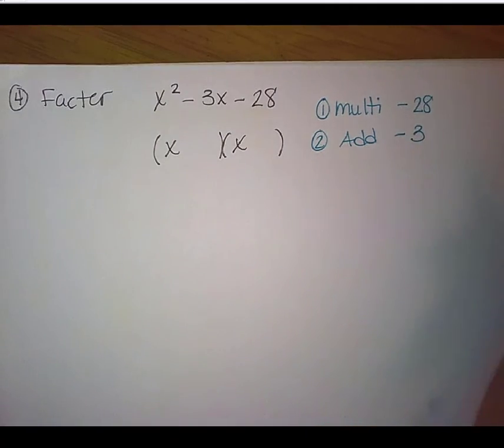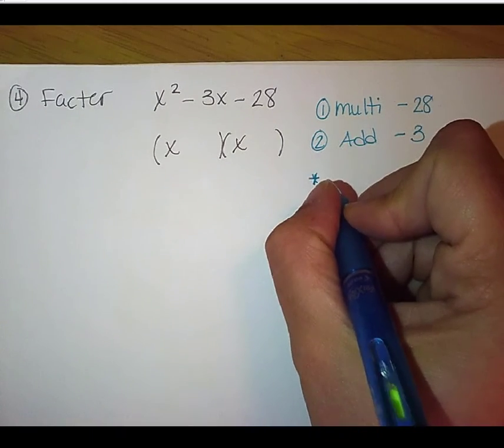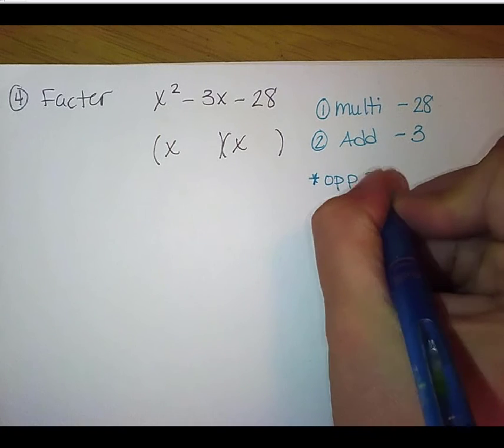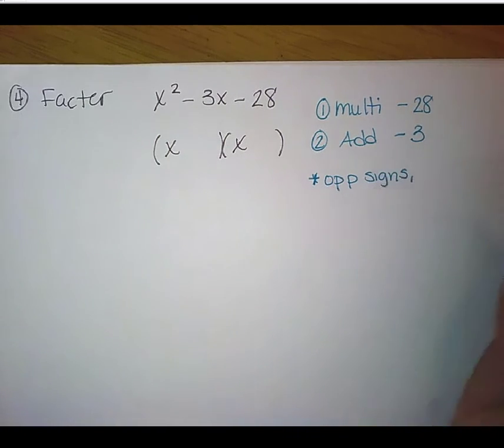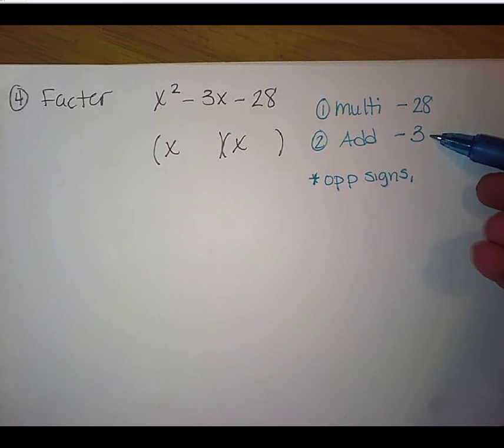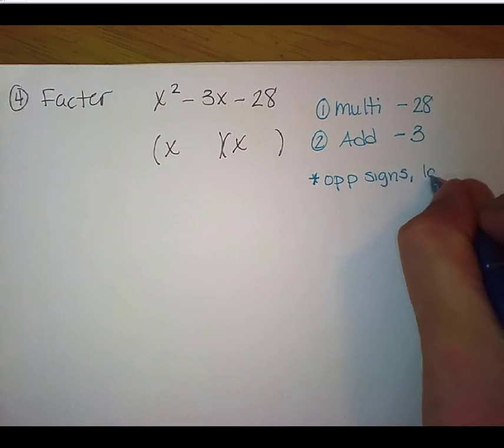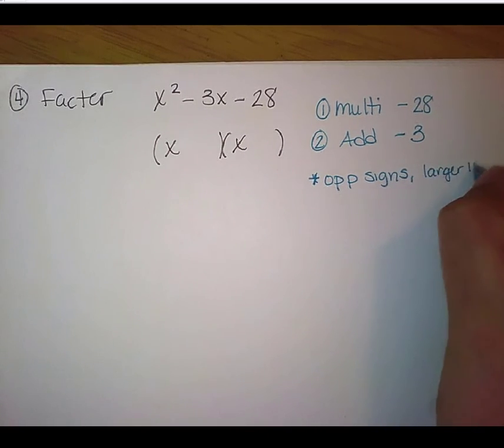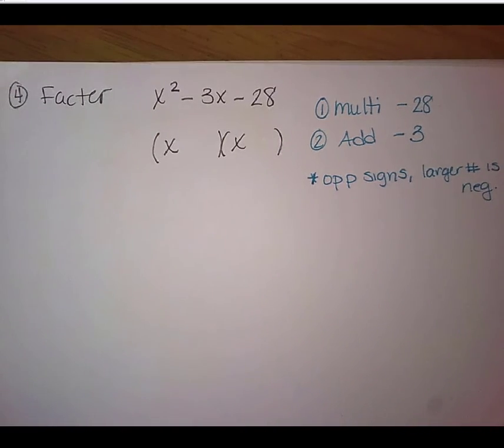We want to multiply to a negative 28. We want to add to a negative 3. So again, let's talk about our signs. We'll start here. So because this guy is negative and we're multiplying to a negative, that means that we are using opposite signs. One positive, one negative. Here, because we're adding to a negative number and we have those opposite signs, this means that our larger number is negative. Okay? So out of the two numbers we find to multiply together, our larger one is going to be our negative value.